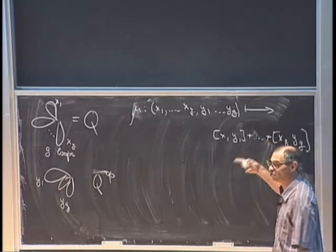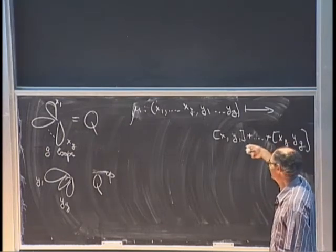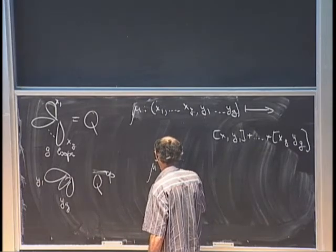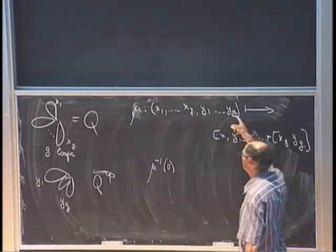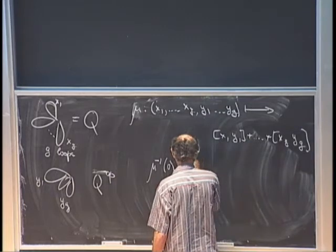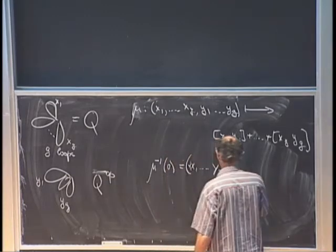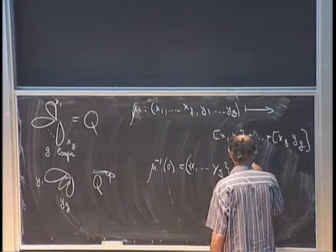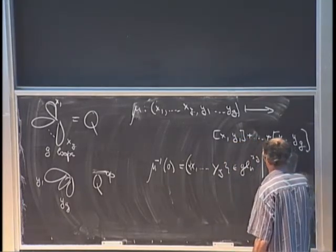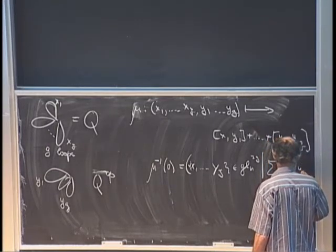Again, we can only take the inverse image of zero (scalar has to be zero since trace of the expression is zero). So the fiber over zero is the set of 2g-tuples of matrices satisfying the condition that the sum of commutators is zero.